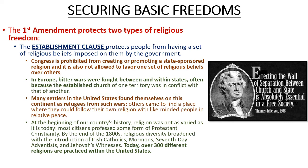The First Amendment contains quite a lot, so we'll pick apart each clause. Number one, we have the establishment clause. The First Amendment protects two types of religious freedom: first, that the federal government can't have an officially sponsored religion the way England had the Church of England; and second, that the government cannot prohibit any citizen from exercising the religion that they want to. That first part — saying the government cannot establish an official religion — is what we call the establishment clause, and it protects people from having a set of religious beliefs imposed on them by the government.